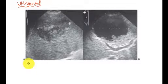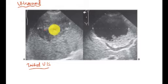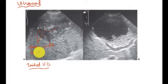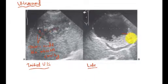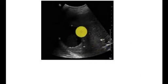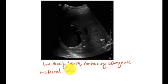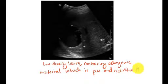On ultrasound, the first image shows the initial stage where you can see debris inside the abscess cavity. The second image shows the late stage where you can clearly see the liquefied pus inside the abscess cavity. There are low density lesions containing echogenic material, which is pus and necrotic tissue.